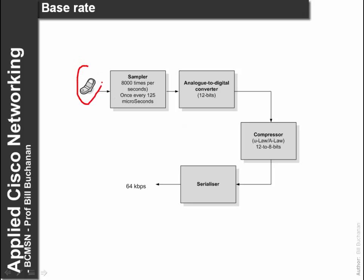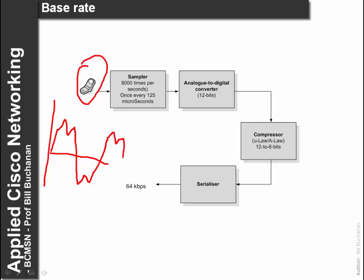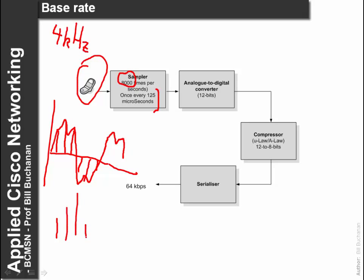For voice, we start off with the voice signal. We typically see harmonics in speech, and then what we do is sample it a number of times per second. It was Nyquist that showed that the sampling rate should be twice the highest frequency of the signal. In normal telephone, the highest frequency is 4000Hz or 4kHz. The sampling rate is typically 8000 times per second, or once every 125 microseconds. We end up with a number of samples which give the height of the wave. Then we feed this into an analogue-to-digital converter to convert it into a binary format.